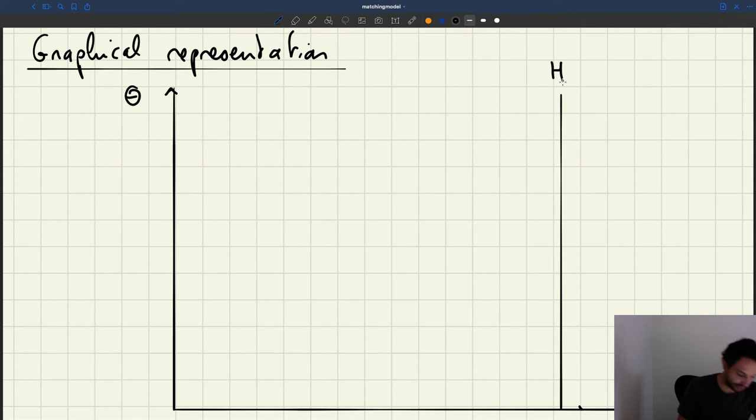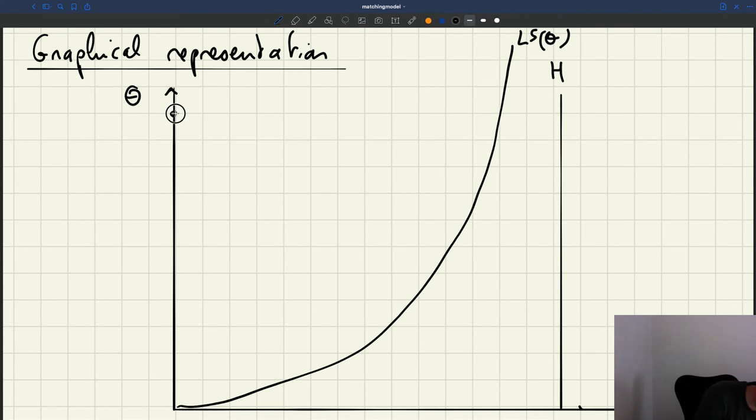Okay, so you remember that the supply is always going to look something like this. That's what we have established, that the labor supply is theta. You remember that we had introduced the tightness theta m at which demand is equal to zero.